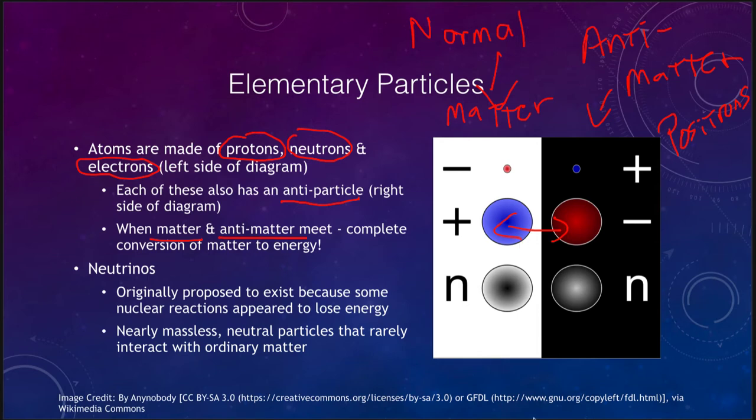When matter and antimatter meet, we get the complete conversion of matter into energy. An antiproton meeting a proton would annihilate each other. The mass would be completely gone and completely converted into energy.